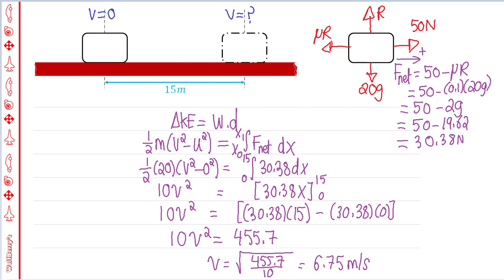So the speed of the brick after 50 meters of these forces acting is 6.75 meters per second.